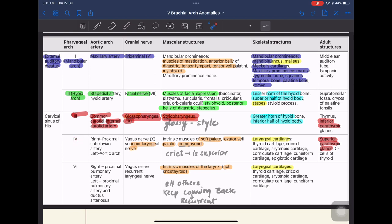Now coming on to the fourth pharyngeal arch. The cranial nerves are the superior laryngeal nerve. The muscles are the intrinsic muscles of soft palate, levator veli palatini and cricothyroid. How we can remember: cricothyroid is supplied by superior laryngeal nerve because cricket is the superior sport in India. It forms the laryngeal cartilages. And also the adult structure is the superior parathyroid gland and the C cells of thyroid.